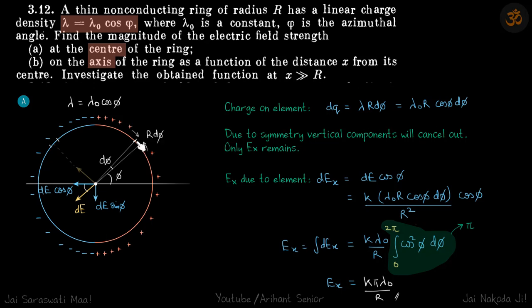Now due to symmetry, if you see the field due to this component and field due to this component, their magnitudes will be same but their directions are like this, so vertical components will get cancelled out. Only horizontal component will remain. You can also see that from symmetry. This part is symmetrical to this part. Negative charge is here, positive charges are here, net field should be towards left.